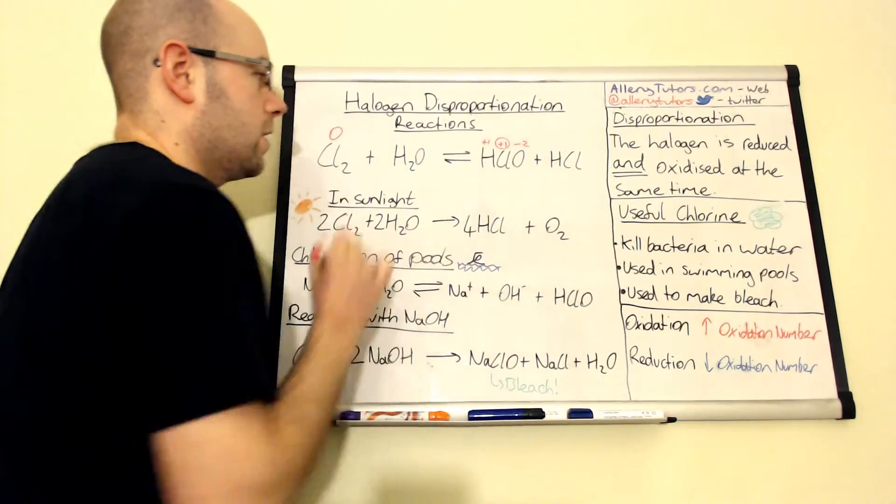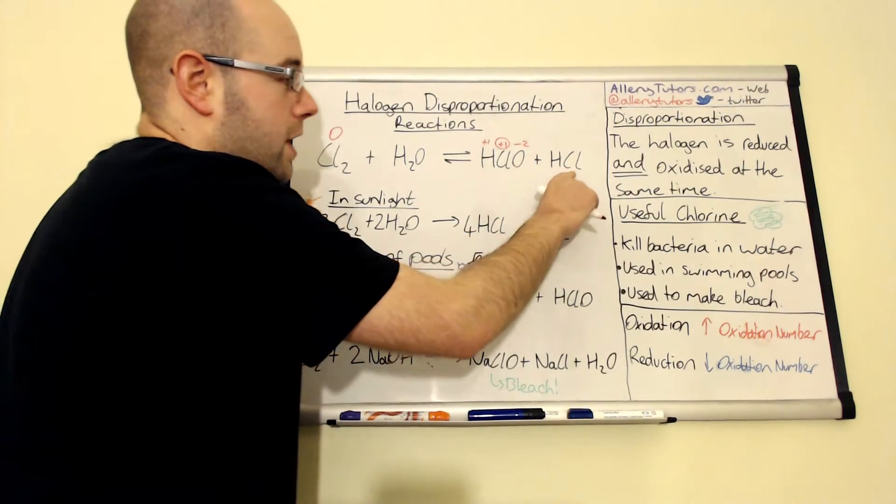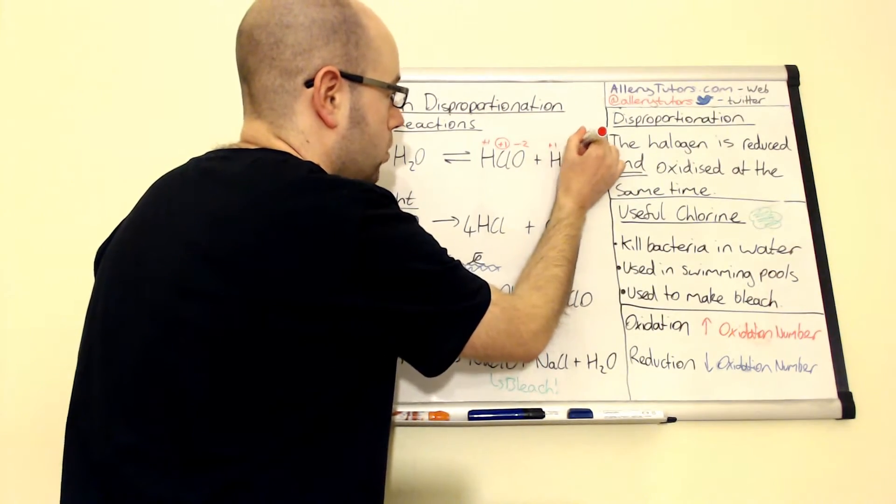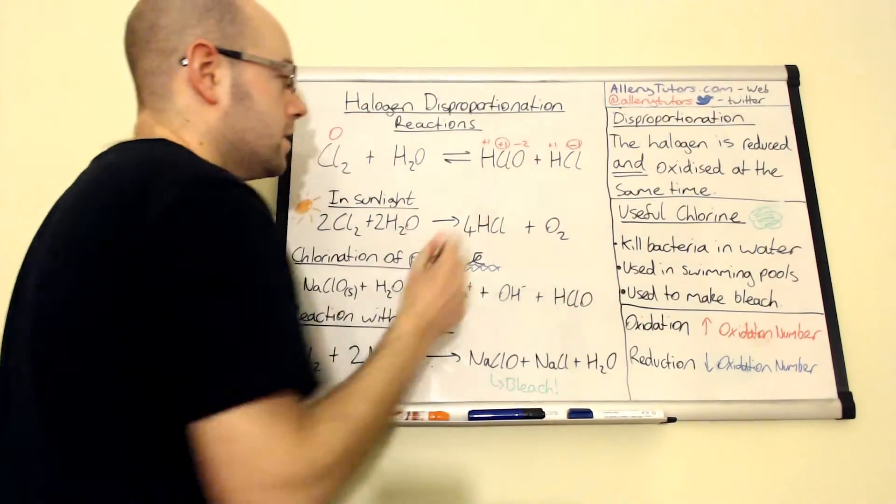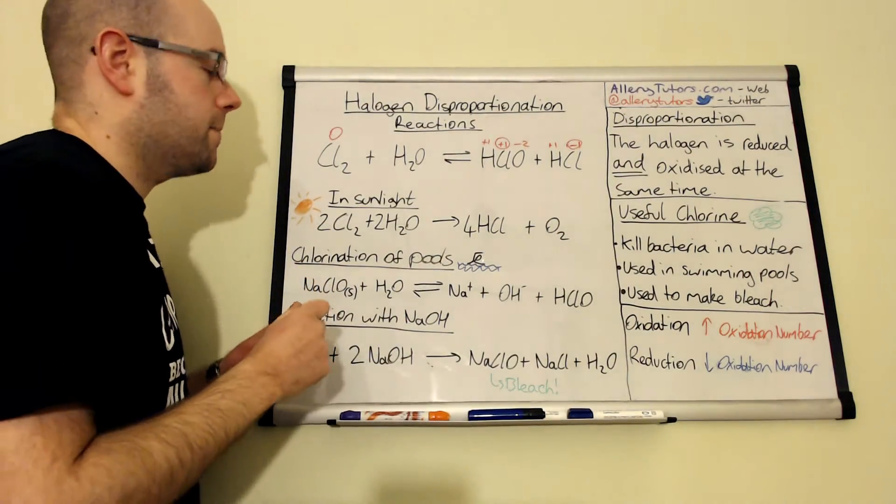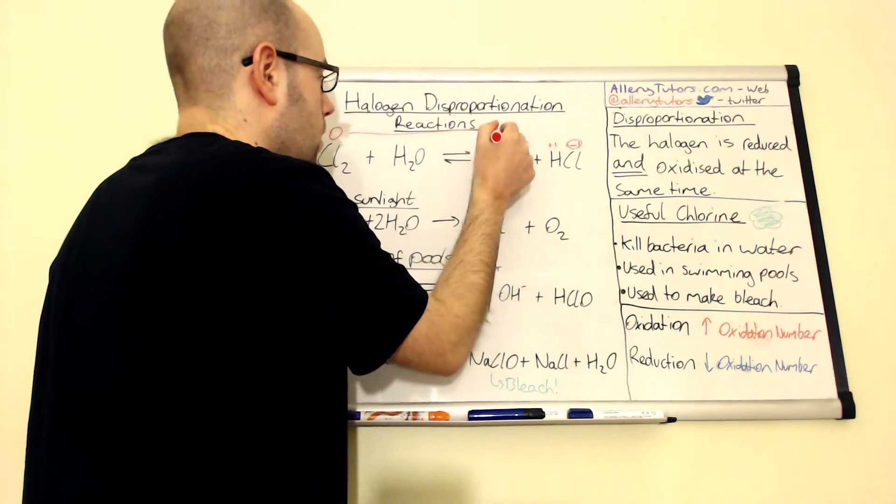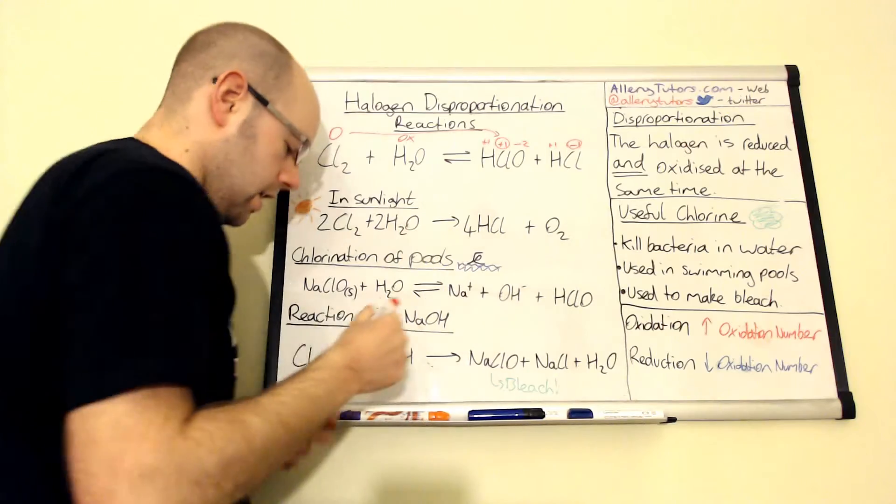That's the key one that we're going to look at there. Then the chlorine in this HCl, hydrogen is plus one and chlorine is minus one. So you can see that actually what's happened here is our chlorine has been simultaneously oxidized there and it's also been reduced.